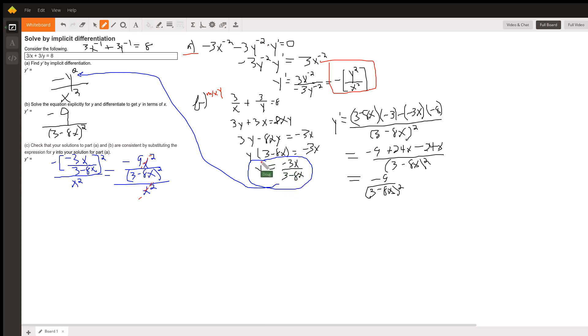And then divide by 3 minus 8x to give us this expression for y in terms of x. We've solved explicitly for y in terms of x. So to find y prime from this, we're going to use the quotient rule.